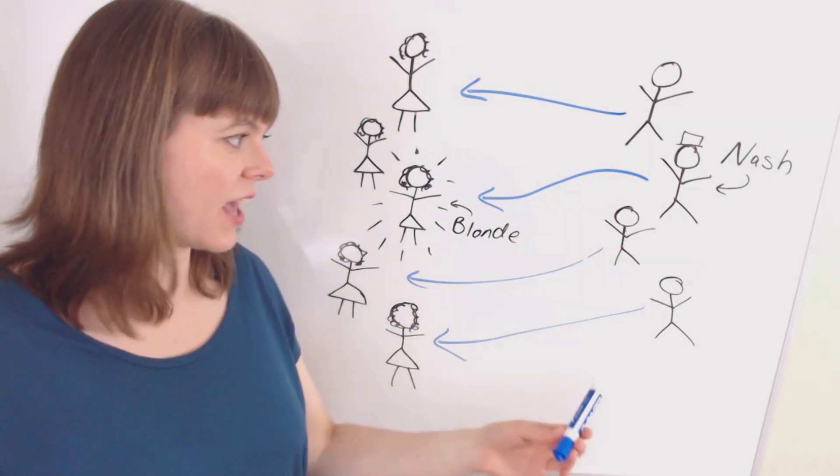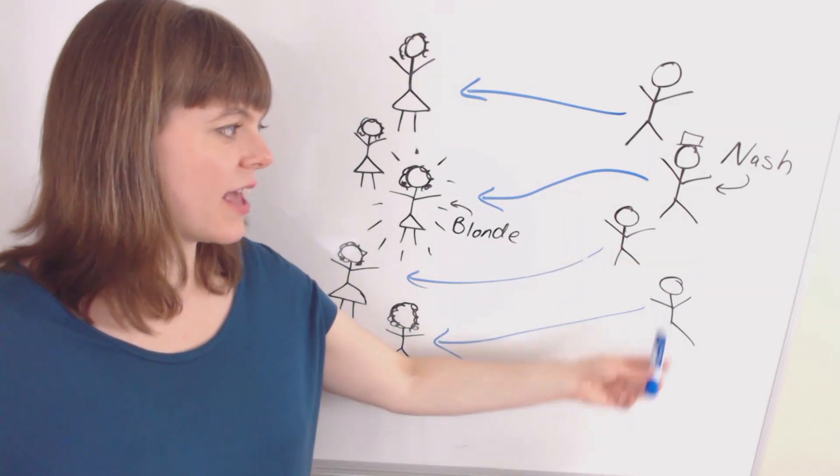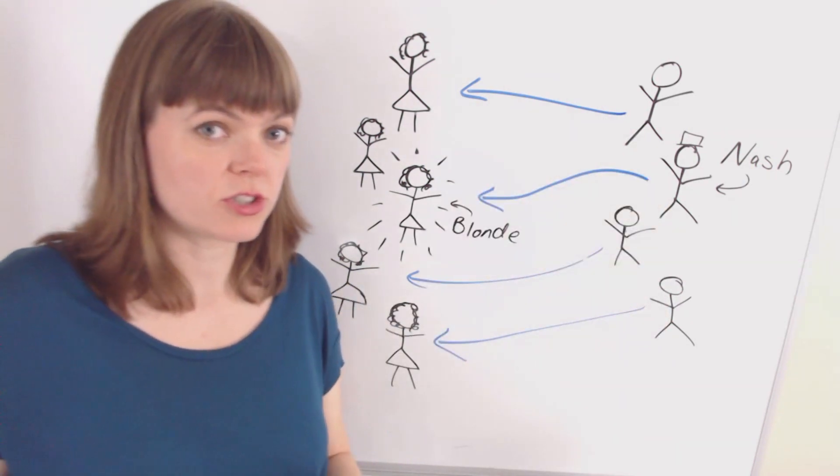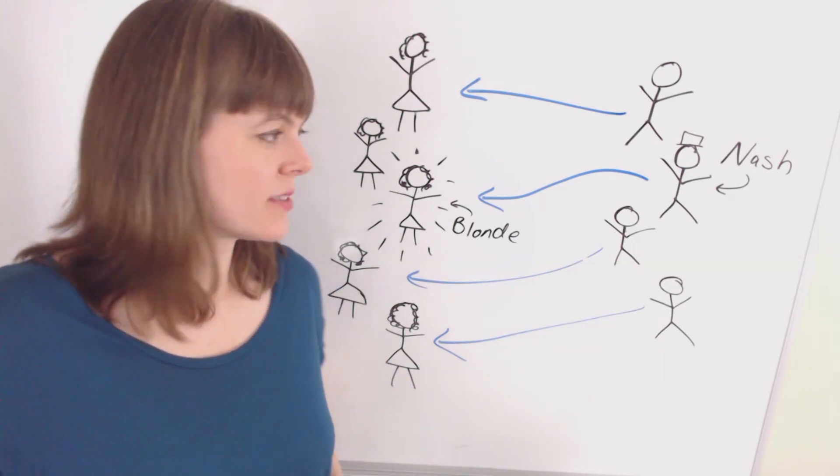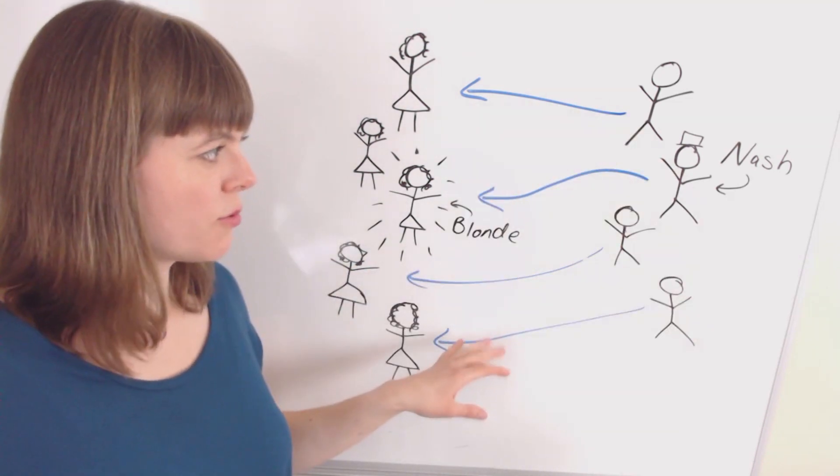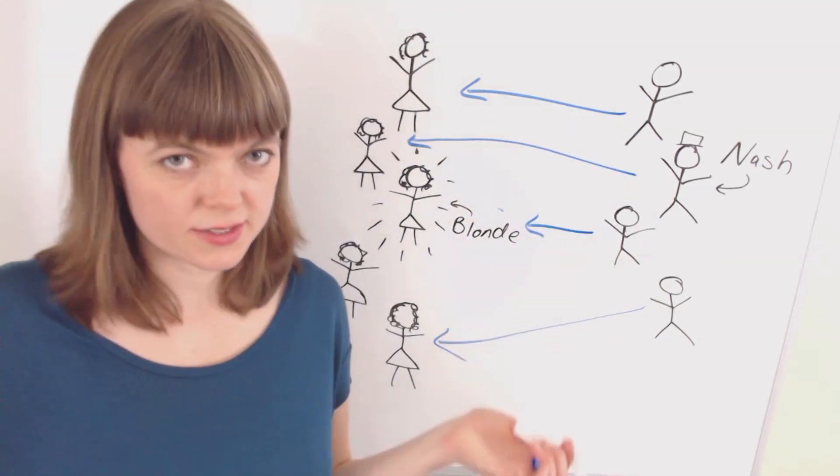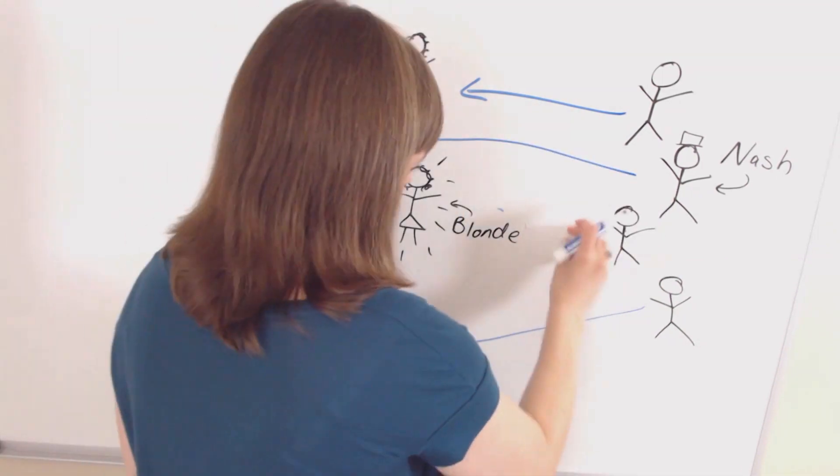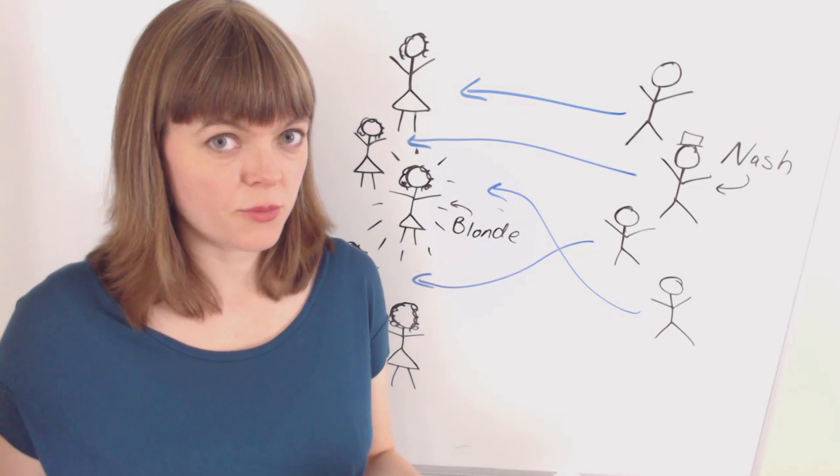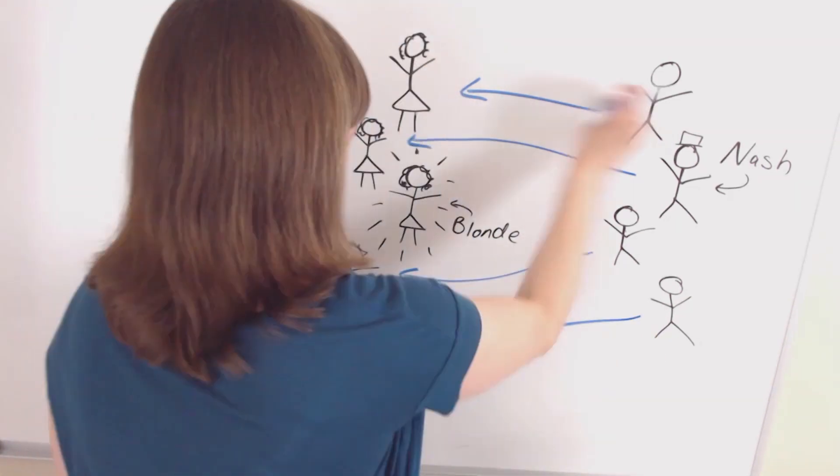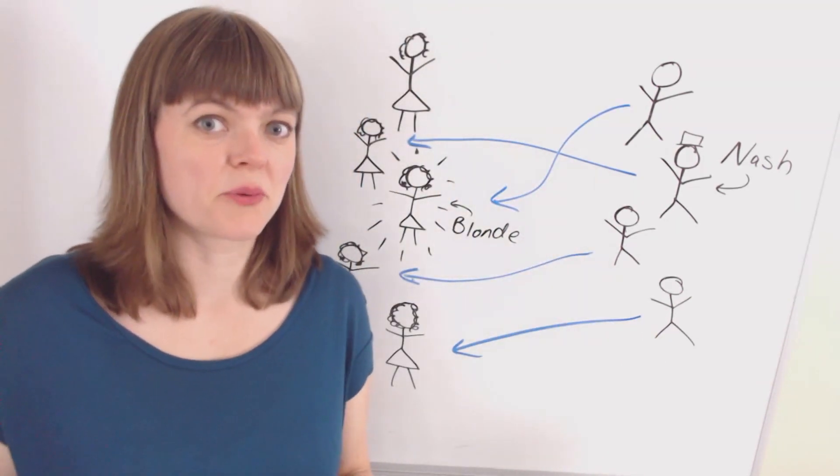As long as this is the case, each of these guys can say, given what the other players chose to do, I'm happy with my own choice. So this is a Nash equilibrium, this is a Nash equilibrium, this is a Nash equilibrium, and this is a Nash equilibrium.